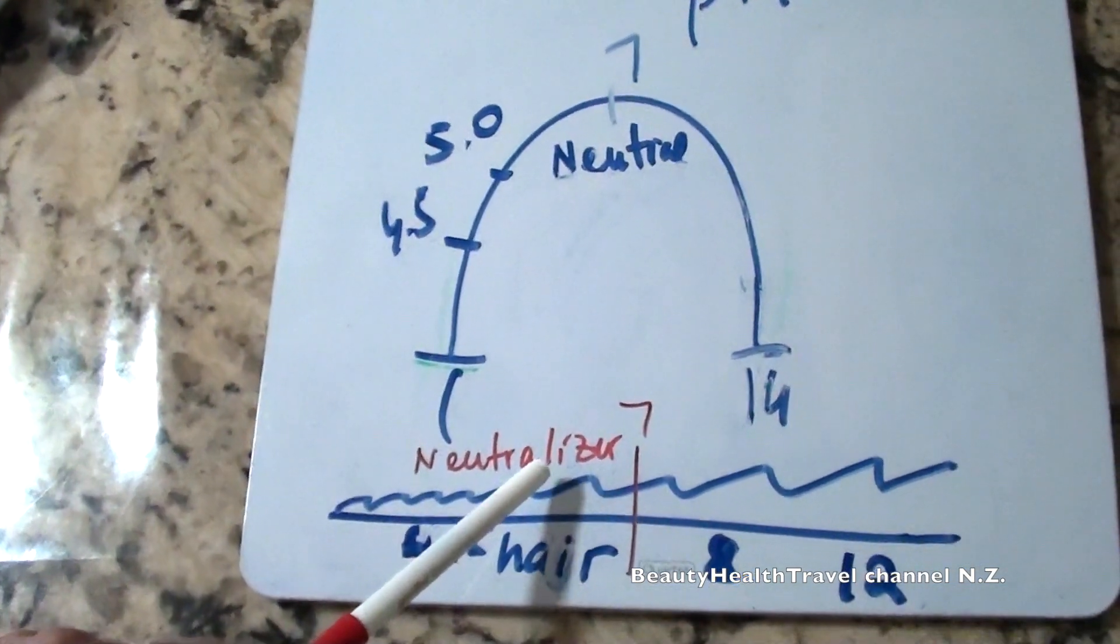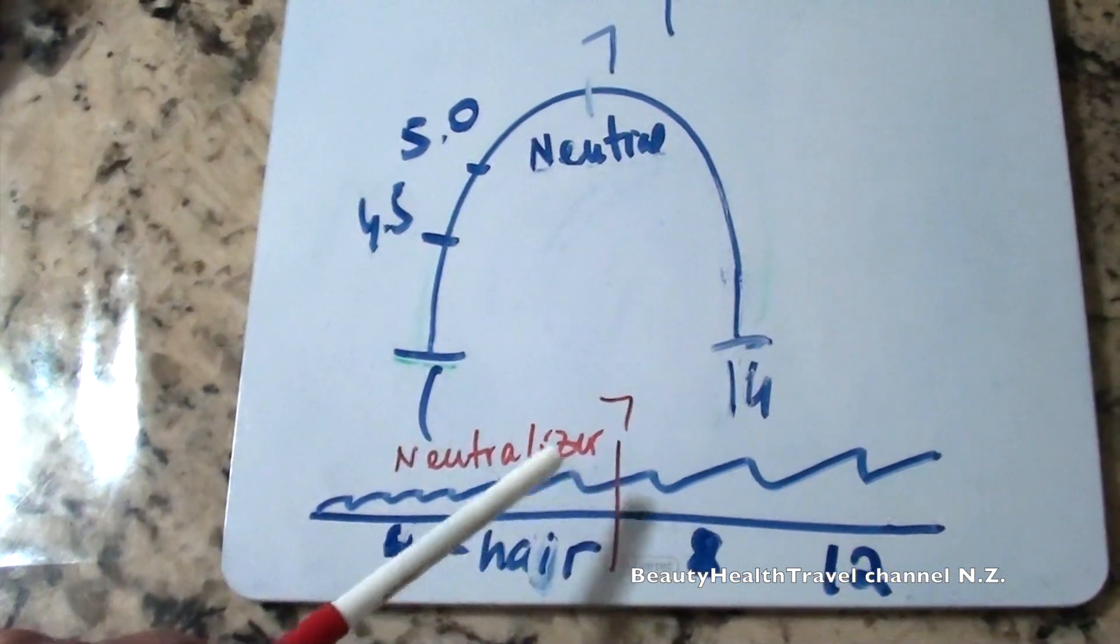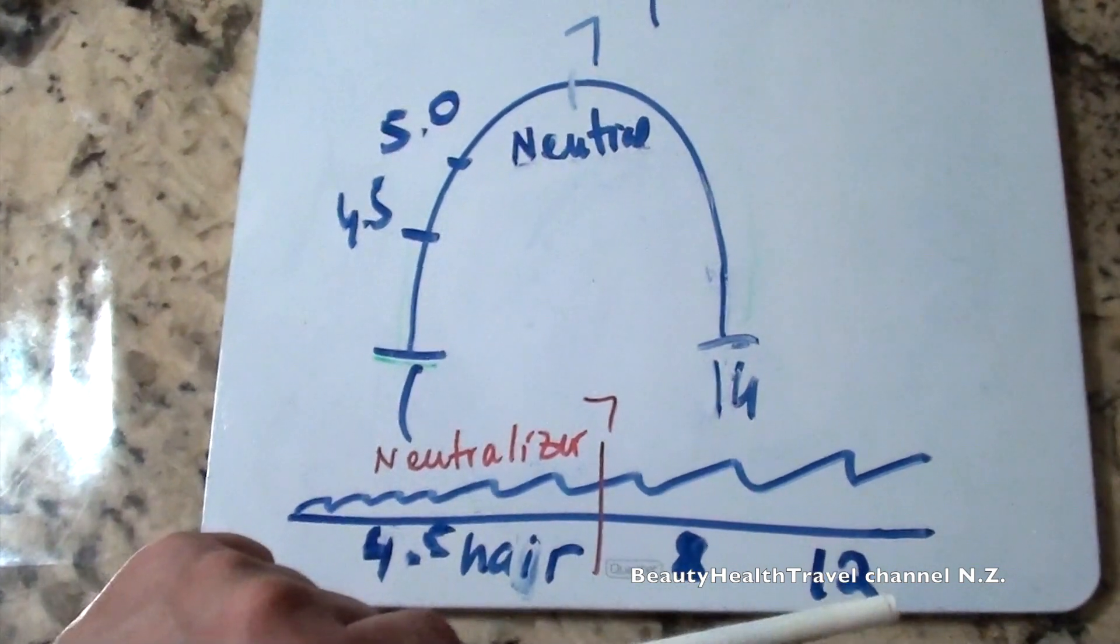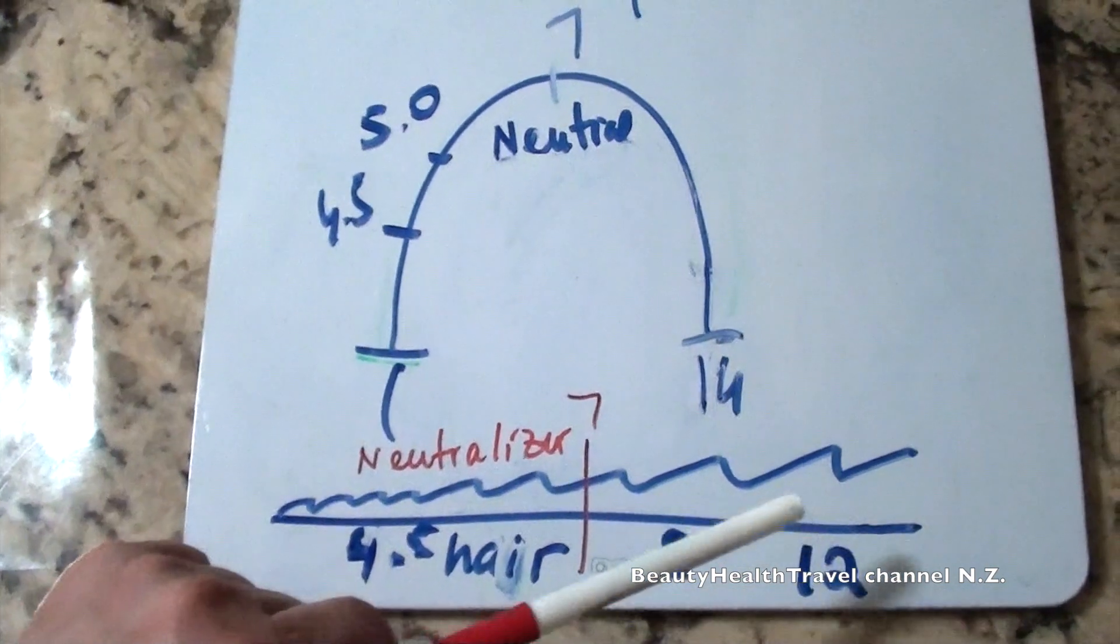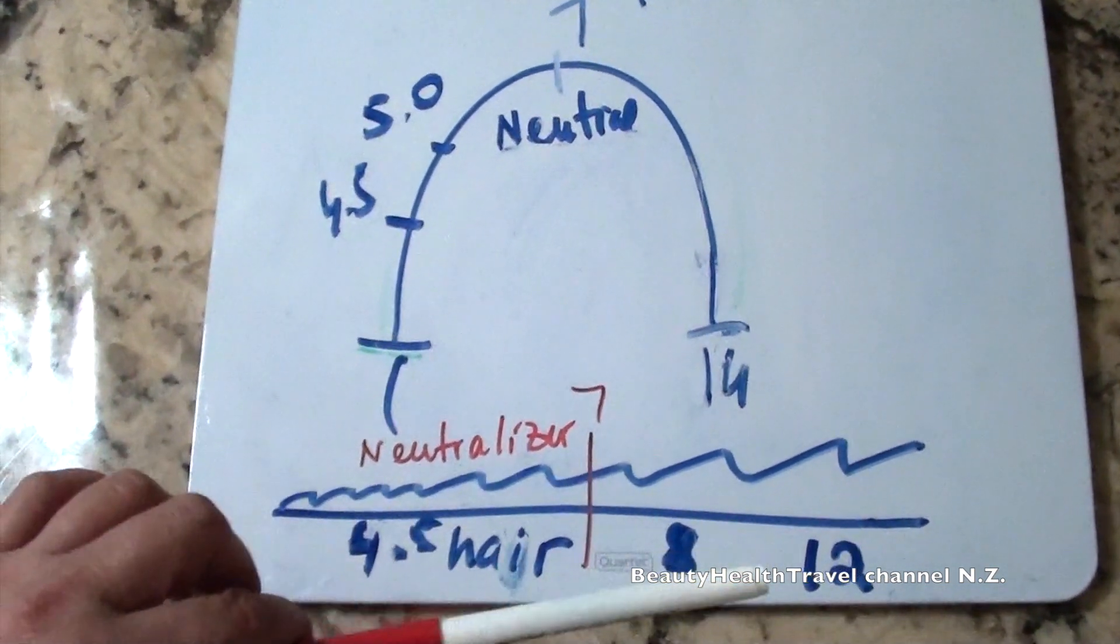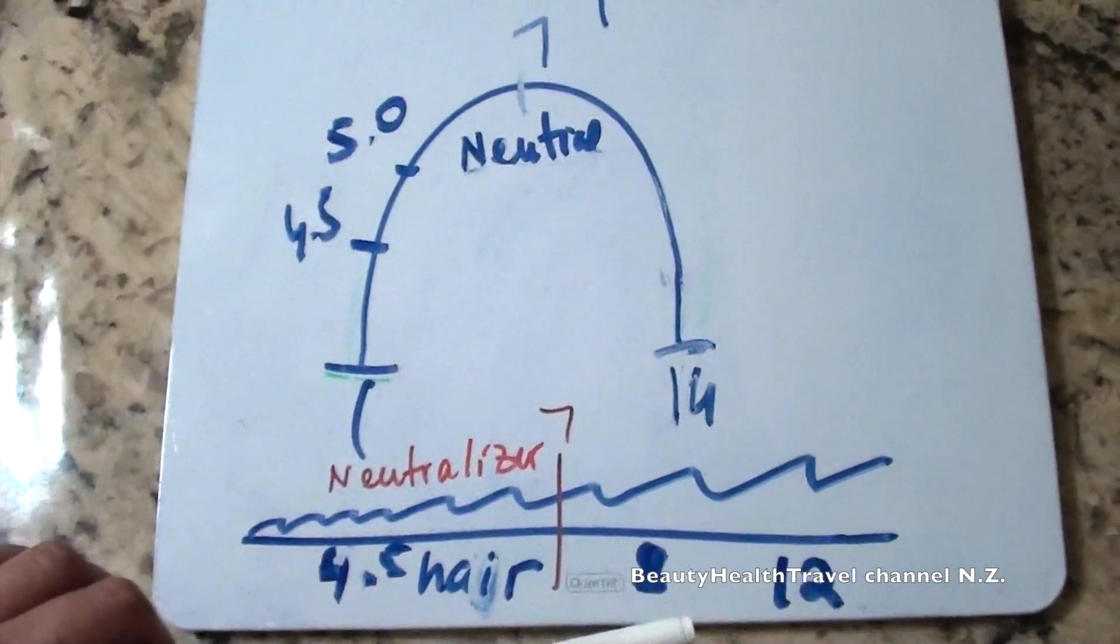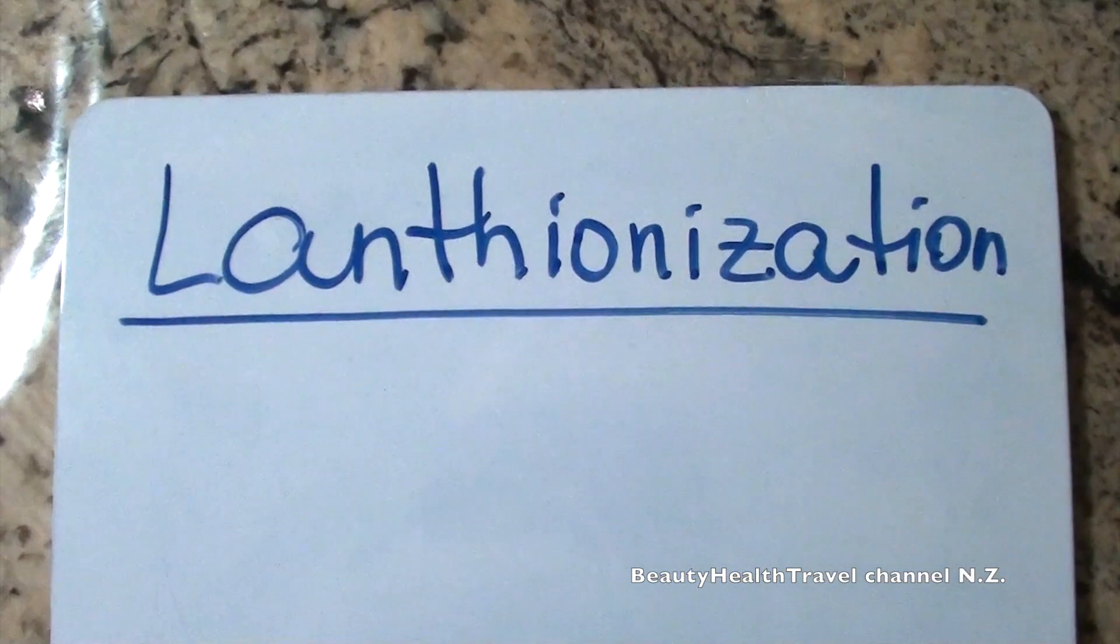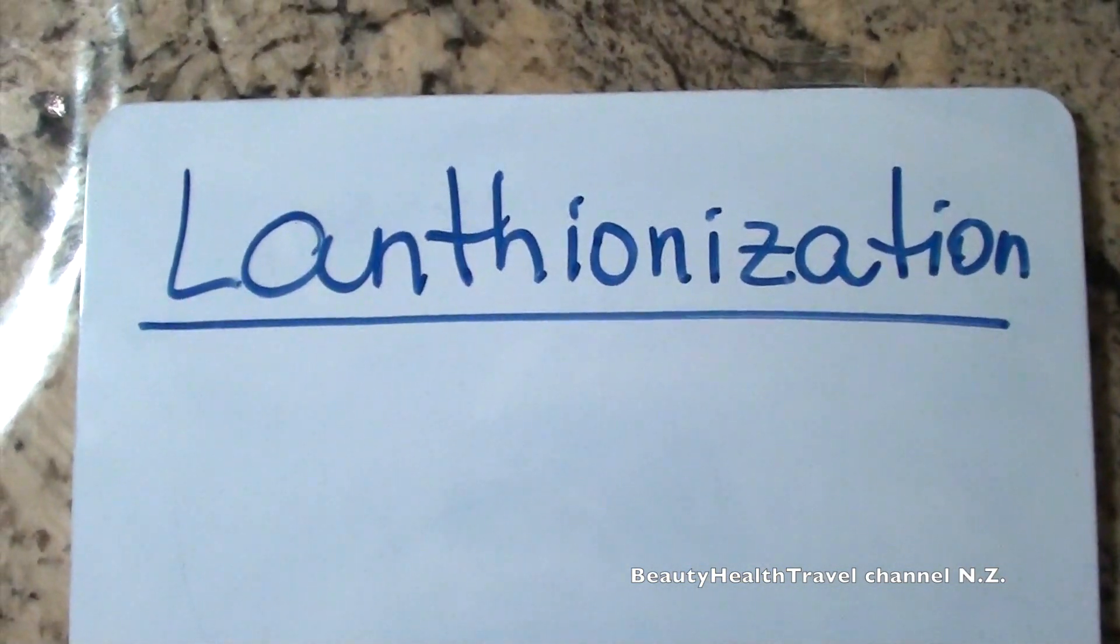But for ammonium thioglycolate, the neutralizer would work better. But for sodium hydroxide relaxer, the neutralizing shampoo somewhat balances the hair. But this is what happens to sodium hydroxide relaxer. It's a process called lanthionization.